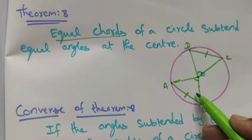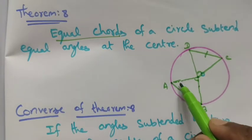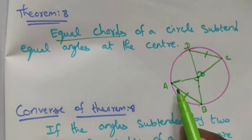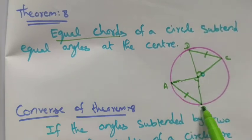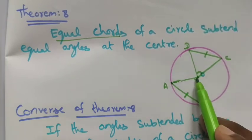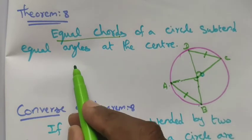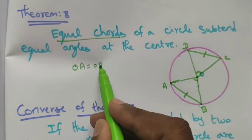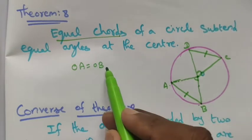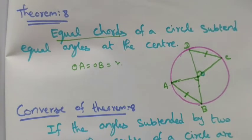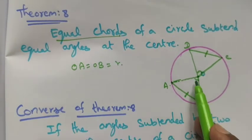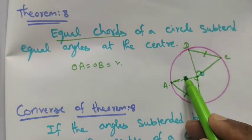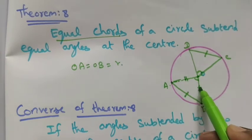Equal angle at the center. Here we have triangle OAB. OA and OB are two radii of the circle, so OA equals OB. This means triangle OAB is an isosceles triangle, and the two base angles are equal.